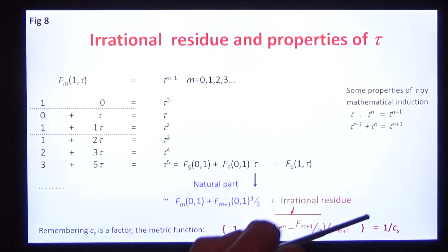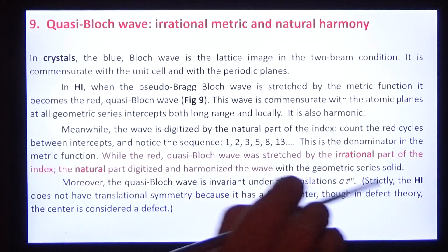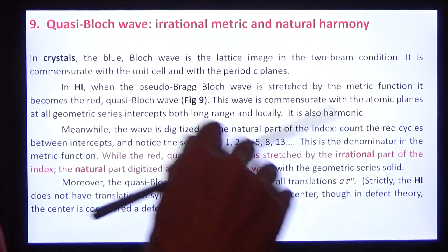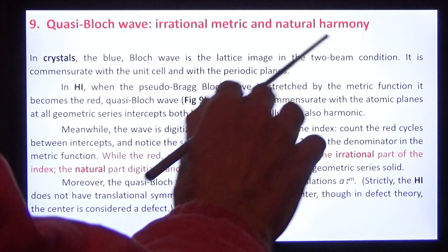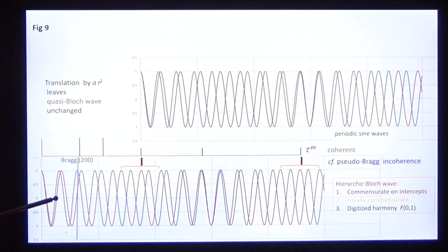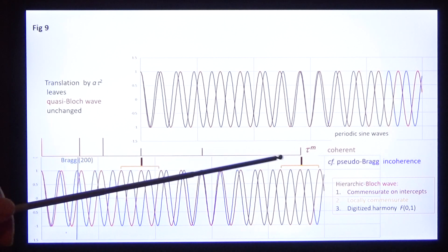The quasi-blockwave will show us an irrational metric with natural harmony. Look at the blue wave. What is a blockwave? It's the lattice image in the two-beam condition in a crystal. It's commensurate in the unit cell, commensurate on all cells periodically.